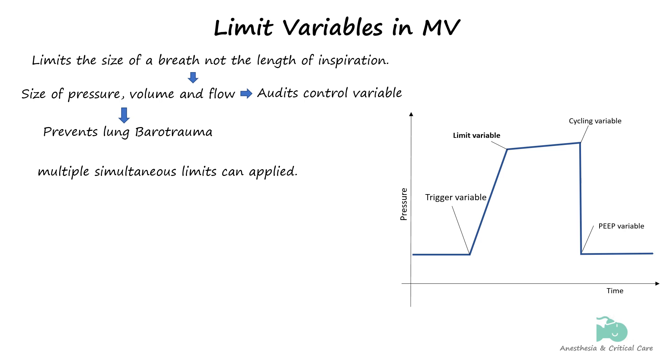That is not to say that those parameters are completely ignored during the other phases of ventilation. There are still limits in place, but they fall into the territory of safety parameters or alarm limit settings. For this reason, limit variables are preferentially called target variables now.